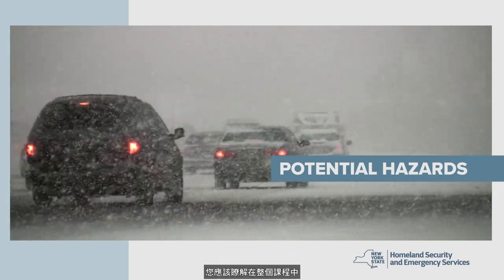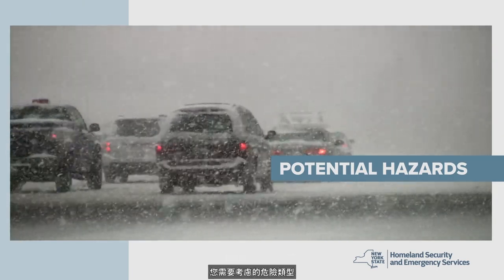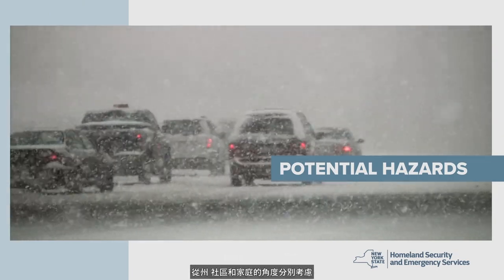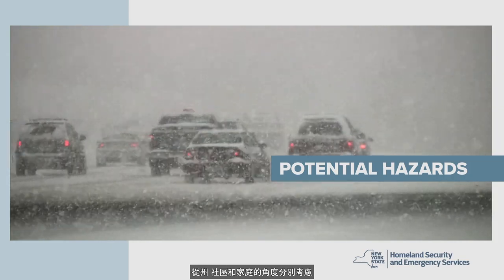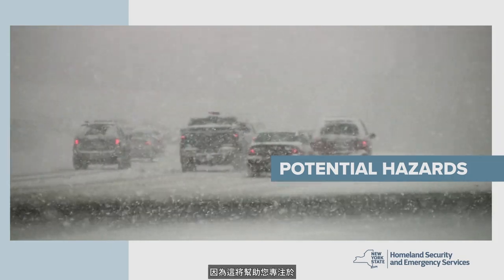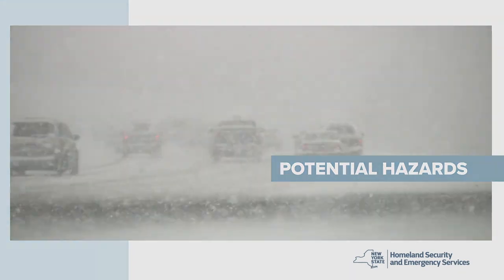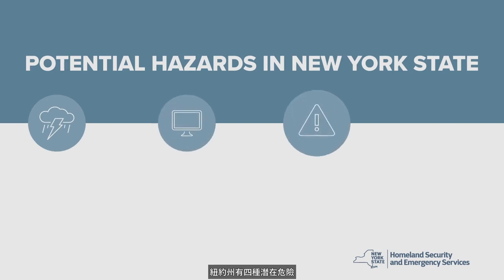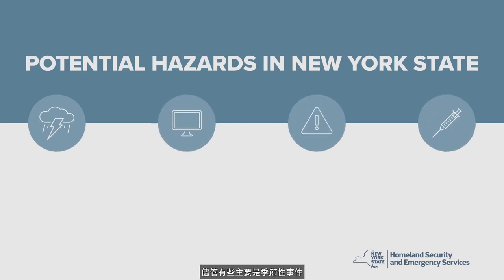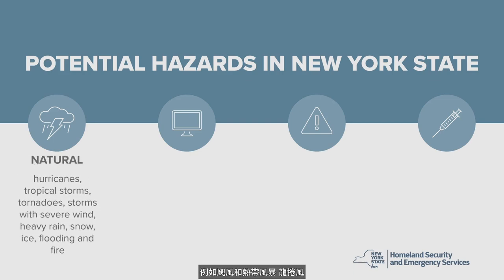Before we begin, you should be aware of the types of hazards that you will need to think about throughout this presentation. Think about the state, your community, and your home, as each will help you focus on a different set of potential situations that you could face. There are four types of potential hazards in New York State, and although some are mainly seasonal events, most can occur at any time. There are natural hazards such as hurricanes and tropical storms, tornadoes, storms with severe wind and heavy rain, snow and ice, flooding, and fire.